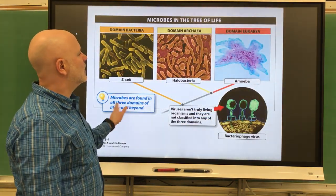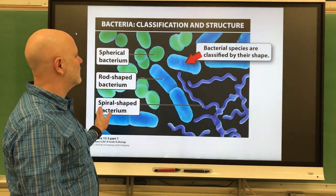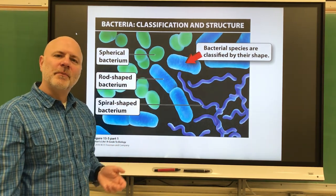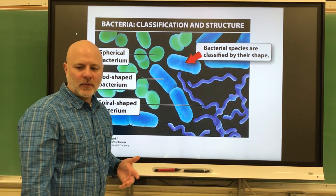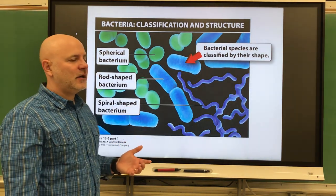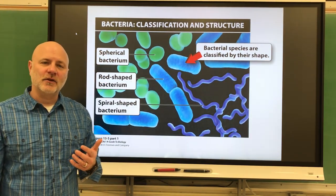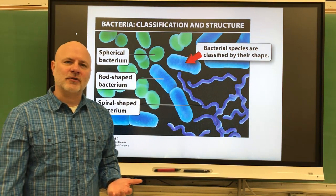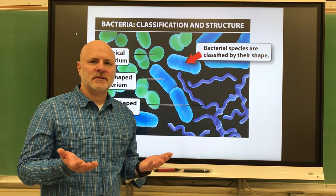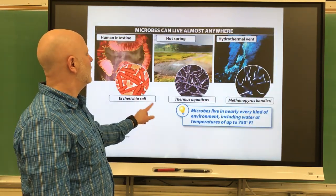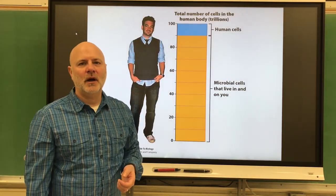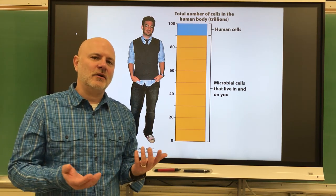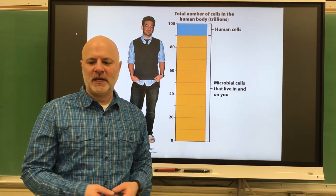One of the ways that we classify bacteria is by their shape — this is showing the three major shapes — or by their genetic sequence. Bacteria can be autotrophs, being either a photoautotroph or a chemoautotroph, or they can be heterotrophic, like the bacteria that live in us. By the way, you're outnumbered even in your own body by bacterial cells. It's just that our cells are much, much larger than bacterial cells.